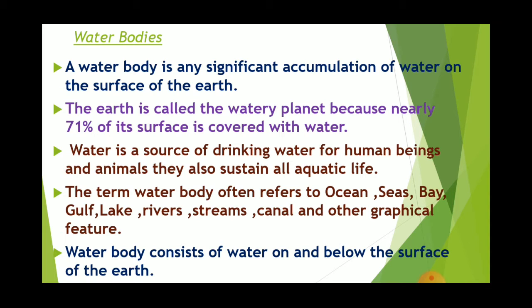A water body is any significant accumulation of water on the surface of the earth. The earth is called a watery planet — also called a blue planet because of the presence of water. Nearly 71% of its surface is covered with water. Water is a source of drinking water for human beings and animals, and it sustains all aquatic life — that is marine life or life that we can see in water. The term water body often refers to oceans, seas, bay, gulf, lake, rivers, streams, canals, and other geographical features.